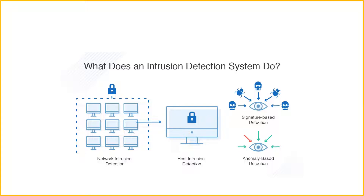However, a signature-based IDS is limited to detecting known threats and is blind to zero-day vulnerabilities. The next technique is anomaly detection. An anomaly-based IDS solution builds a model of the normal behavior of the protected system, and all future behavior is compared to this model — any anomalies are labeled as potential threats and generate alerts.